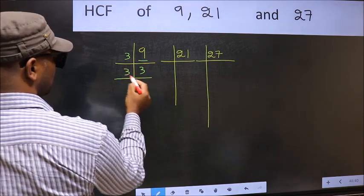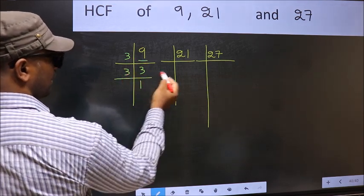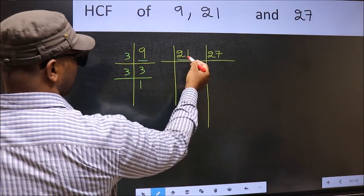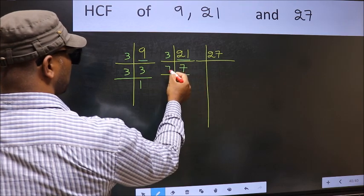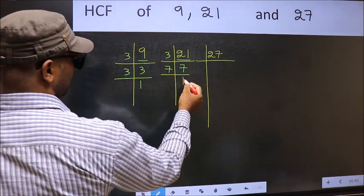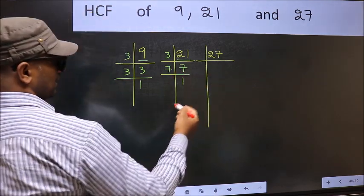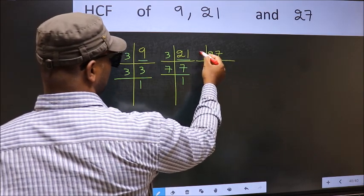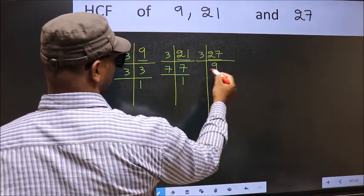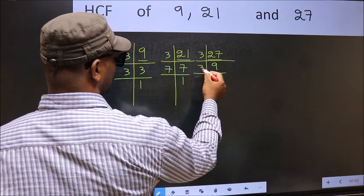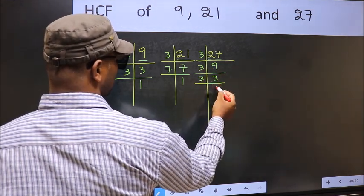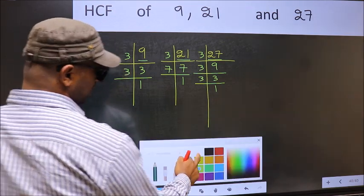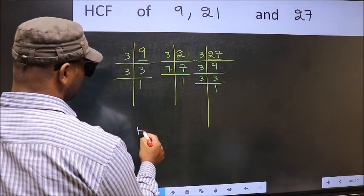...is a prime number, so 3 times 3. Now the other number, 21, is 3 times 7. 7 is a prime number, so 7 times 7. Now the other number, 27: 27 is 3 times 9, and 9 is 3 times 3. 3 is a prime number, so 3 times 3. Therefore, our HCF is...